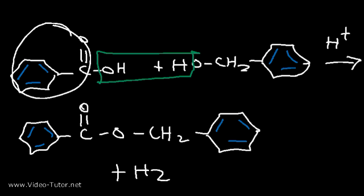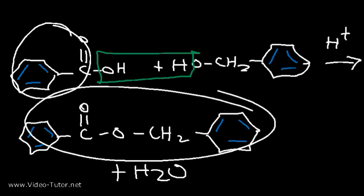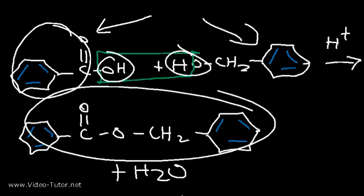So now you know how to quickly tell what product you'll get during the Fischer esterification reaction. It helps if you put the two hydroxyl groups facing each other, and then you could just connect these two groups. Now let's go over the mechanism of the Fischer esterification reaction.